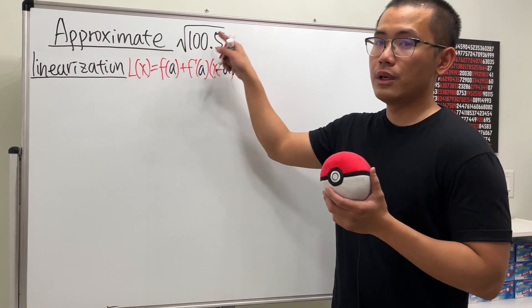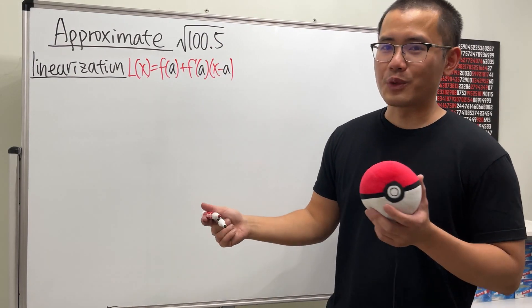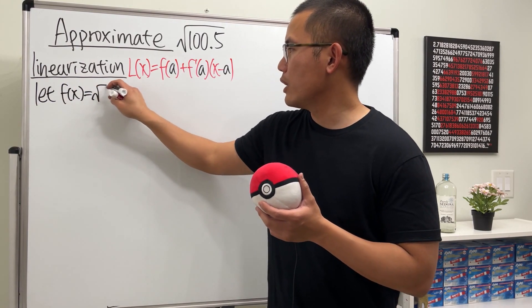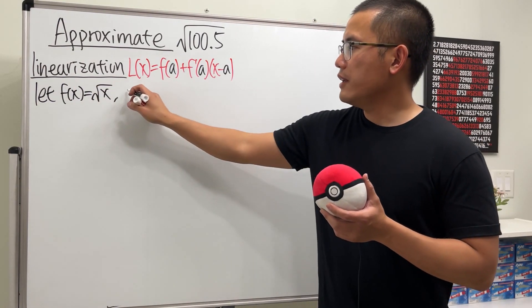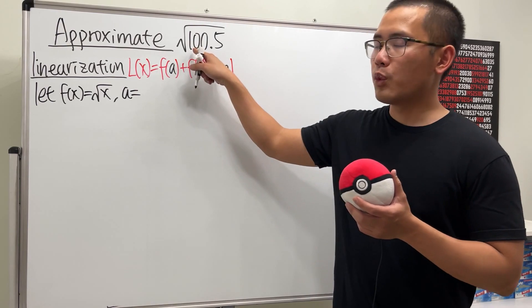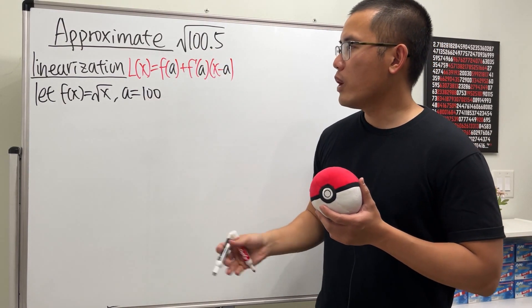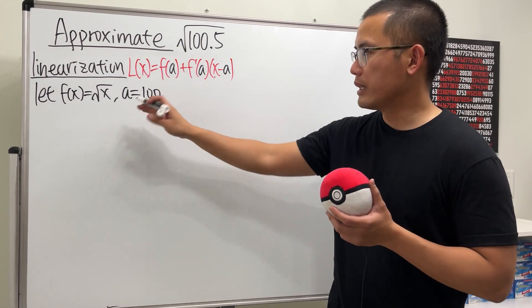So what's the function that we are talking about? Here we have square root of a number, so the function is just square root of x. Let f of x be equal to square root of x. And what's the a value? Not 100.5, but just 100, because we know square root of 100 is a nice number. So that's what we have.